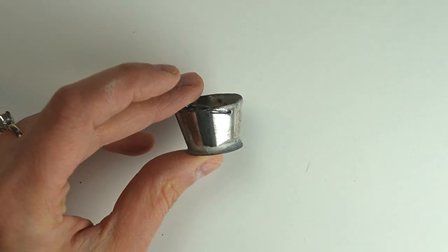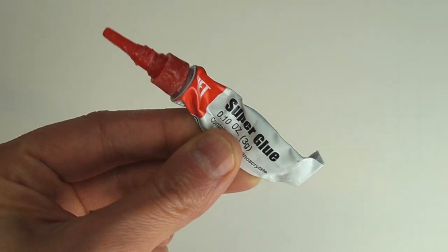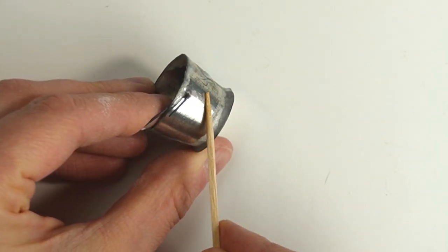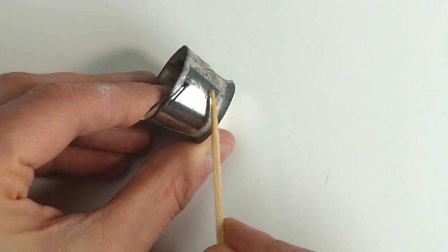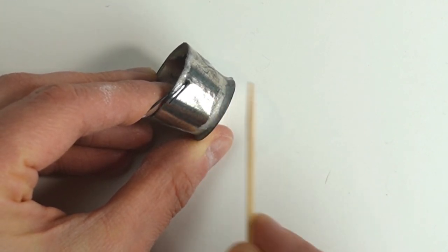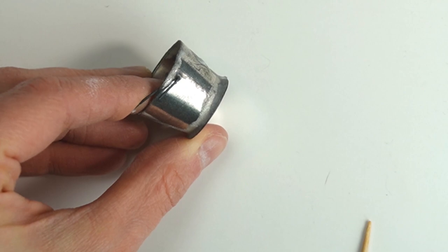To start I want to make my little bucket rusty and that starts with some super glue. I know it's hard to see but I'm using a toothpick to spread some super glue on the surface of my bucket and then I sprinkle some baking soda over that.